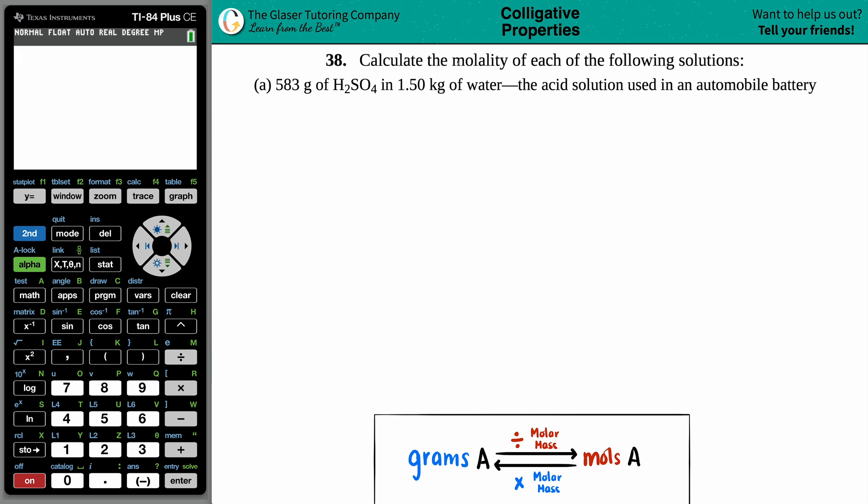Number 38. Calculate the molality of each of the following solutions. So in this case, we have 583 grams of H2SO4 in 1.50 kilograms of water, the acid solution used in an automobile battery.